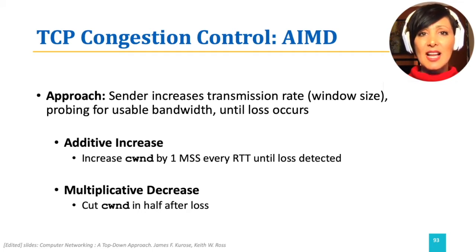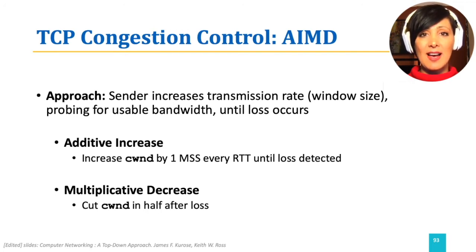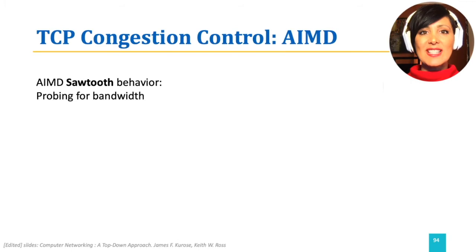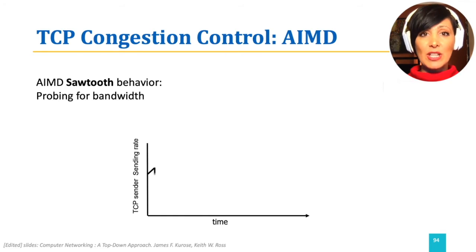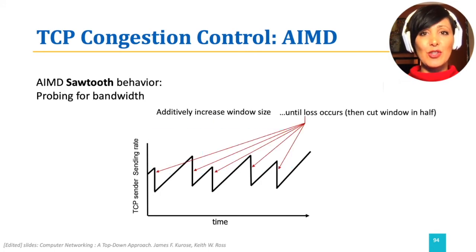When the sender detects loss, it interprets it as congestion and cuts the congestion window size in half. By cutting the congestion window size in half, the sender is trying to reduce its transmission rate substantially so that it does not add to the sources of overwhelming the network. AIMD causes a sawtooth behavior in the TCP transmission rate at the sender. The increases in window size shape the up slopes during additive increase, while the pointy edges of the sawtooth shape occur when cuts in window size happen.